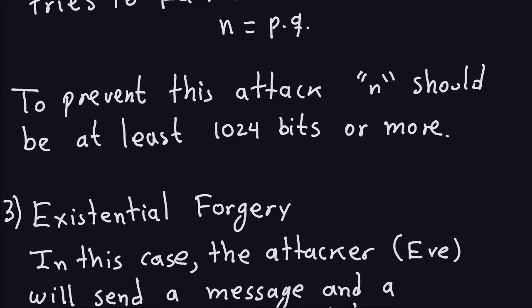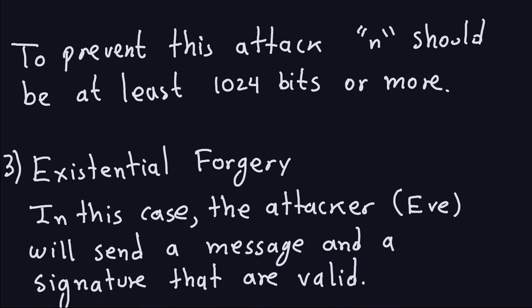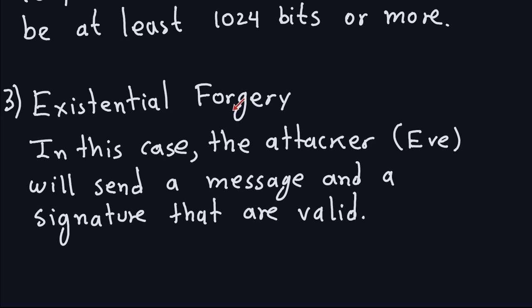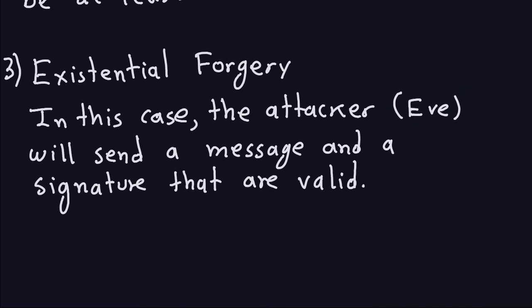The last attack I want to mention, which is very specific to the RSA signature, is existential forgery. In existential forgery, the attacker Eve will send a message and the signature will actually be valid. The only information Eve knows is the public parameters — the modulus and the public exponent. This is actually possible, but there's a little drawback for the attacker, which you will see in a second.